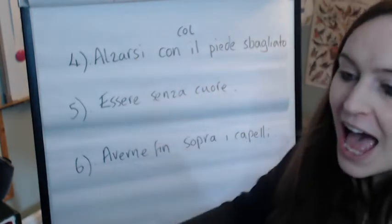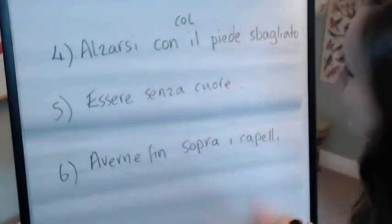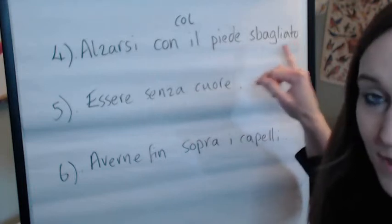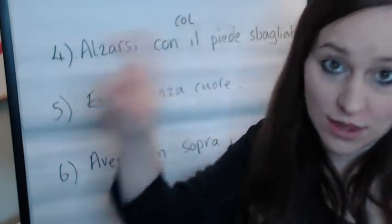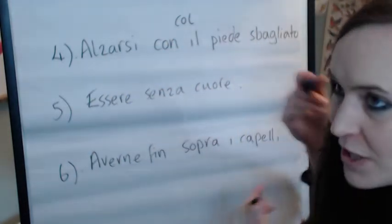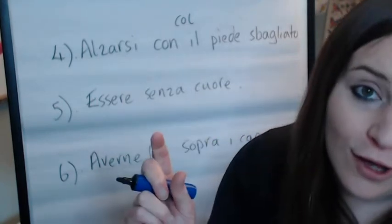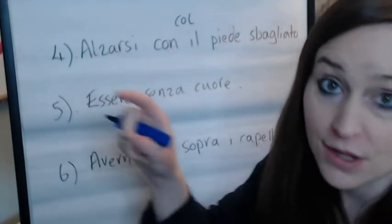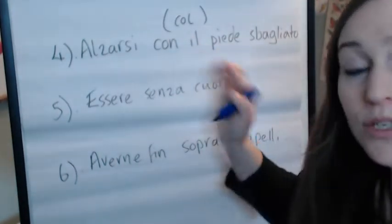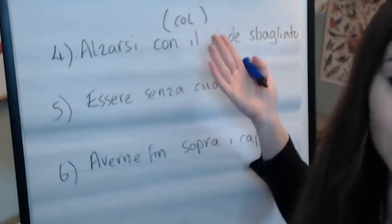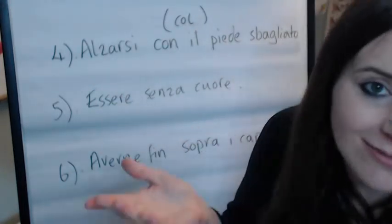Here we have something which also has a close equivalent in English: alzarsi con il piede sbagliato. Con il means 'with the' and can sometimes appear as col. Alzarsi means to get up — as in you wake up and then you get up. It's a reflexive verb, that's why we've got -si at the end.